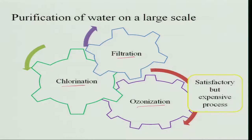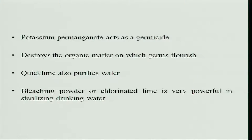Ozonization is a very satisfactory process because you get very pure water, but it is an expensive process and therefore cannot always be followed. Potassium permanganate acts as a germicide — if added to water and left for two or three days, the water becomes free of germs and organic matter is destroyed. Quick lime and bleaching powder, or chlorinated lime, are also very powerful agents for sterilizing drinking water.